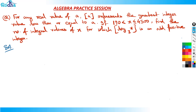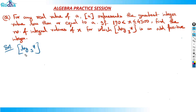The idea behind this question is: I want log of x base 3 to be an odd positive integer, so x should be related to powers of 3. For example, if x = 81, which is 3 raised to 4, then log of 81 base 3 equals 4. So the greatest integer function of that value is 4.